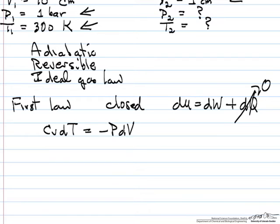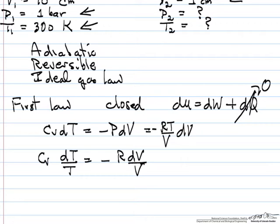Because it's reversible, we can write work as minus PdV. And then we're going to substitute for pressure in terms of the ideal gas law. And then we're going to separate variables so that we can integrate. So Cv dT over T on the left side, R dV over V.